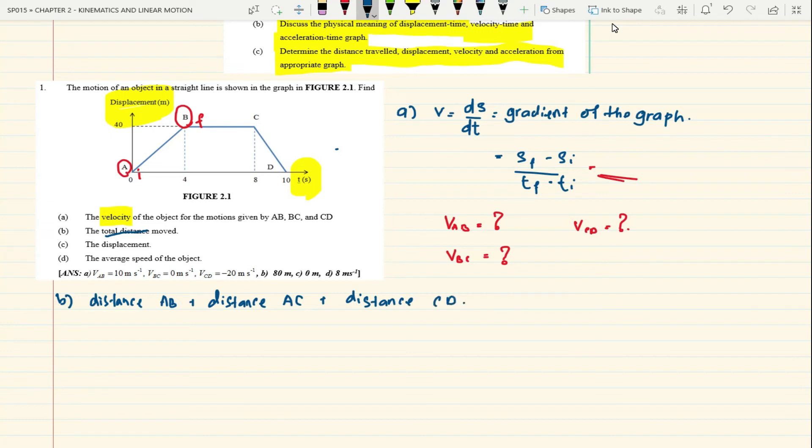Then the displacement. There is a difference between distance and displacement. Distance is what you added earlier, but displacement has direction. If you look here, from A to B it moves 40 meters, from C to D it goes back 40 meters. So the displacement is zero because it returns to the original position: 40 plus negative 40 equals zero.